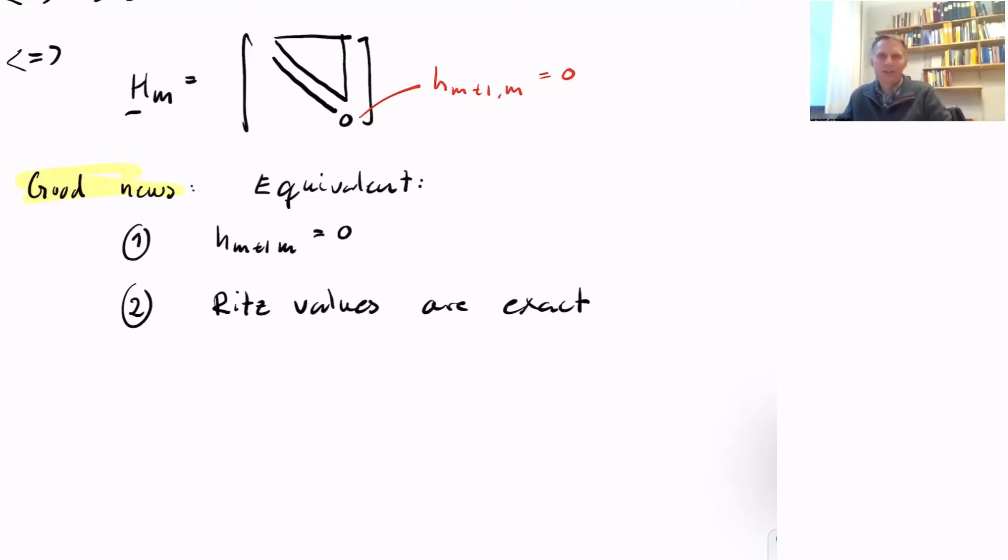Recall that the Arnoldi method is a Rayleigh-Ritz projection method, which means that the Ritz values are our eigenvalue approximations. When we have breakdown, the Ritz values are exact—we have zero approximation error.